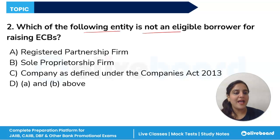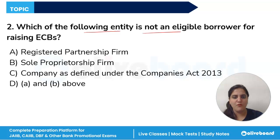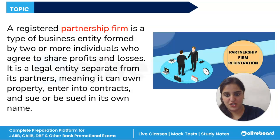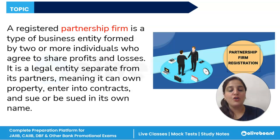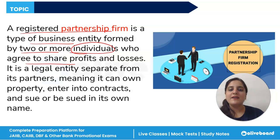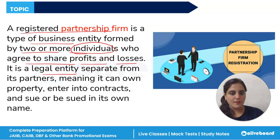Which of the following entities is not an eligible borrower for raising ECBs? A registered partnership firm is a type of business structure in which two or more individuals come together to carry on a business, registered with the Registrar of Firms as per the Indian Partnership Act 1932. It is a legal entity separate from its partners, meaning it can own property, enter into contracts and sue or be sued in its own name.